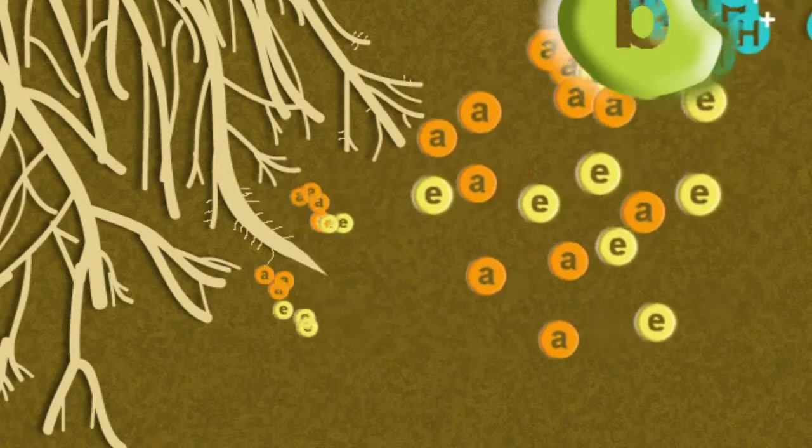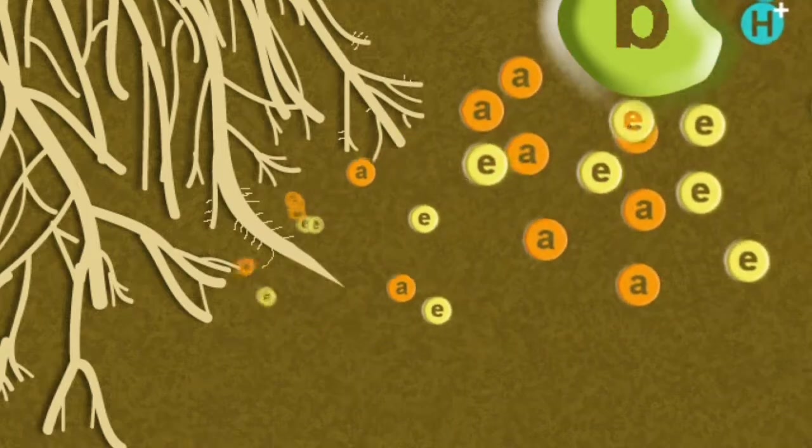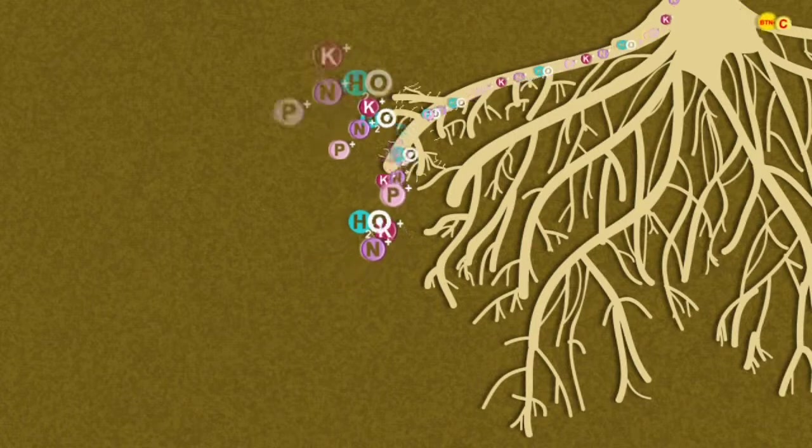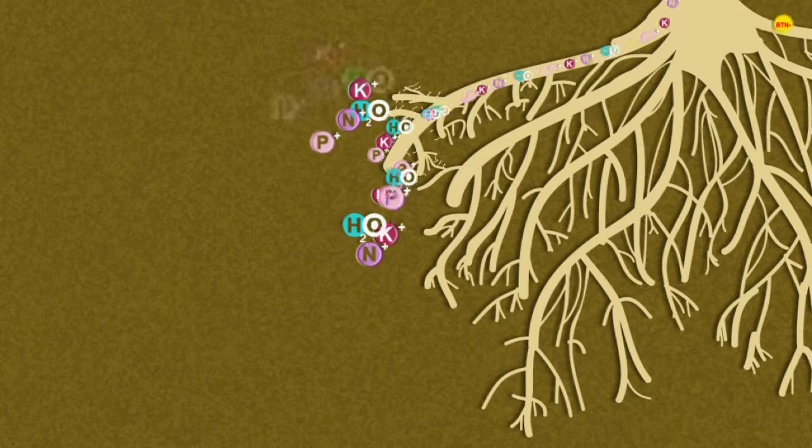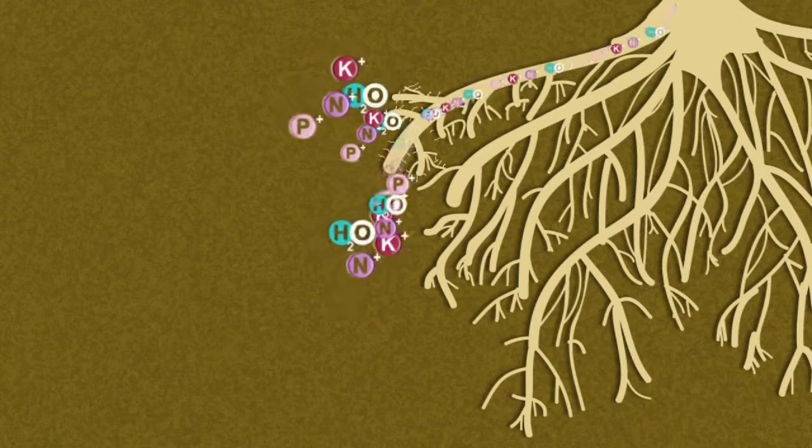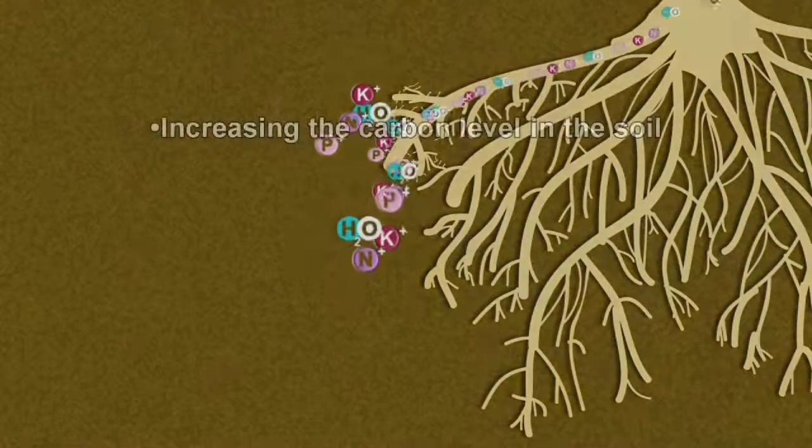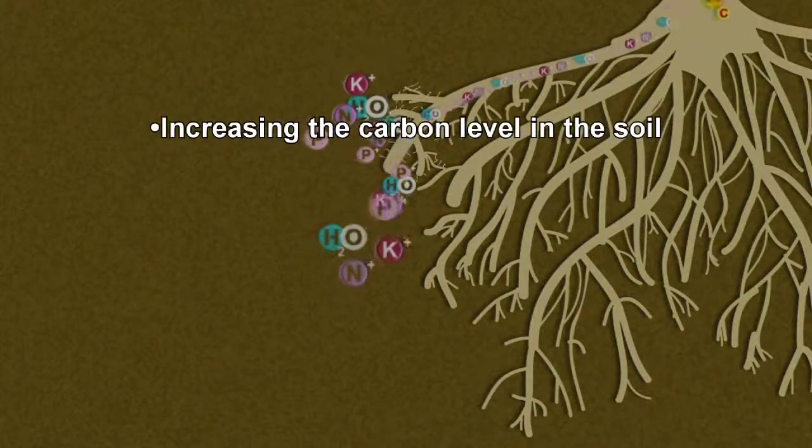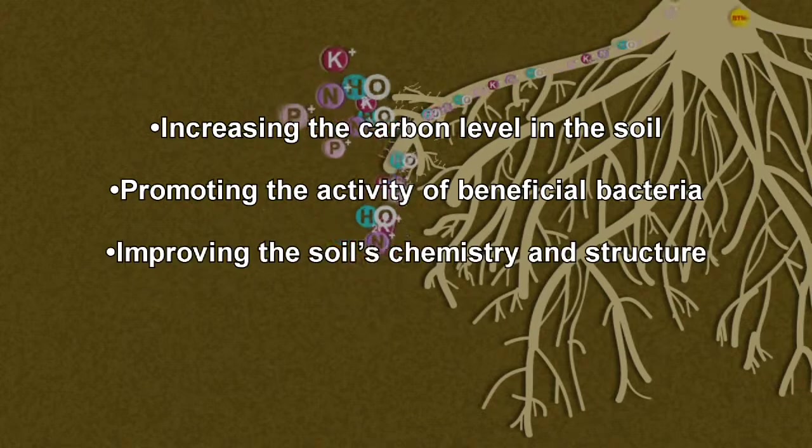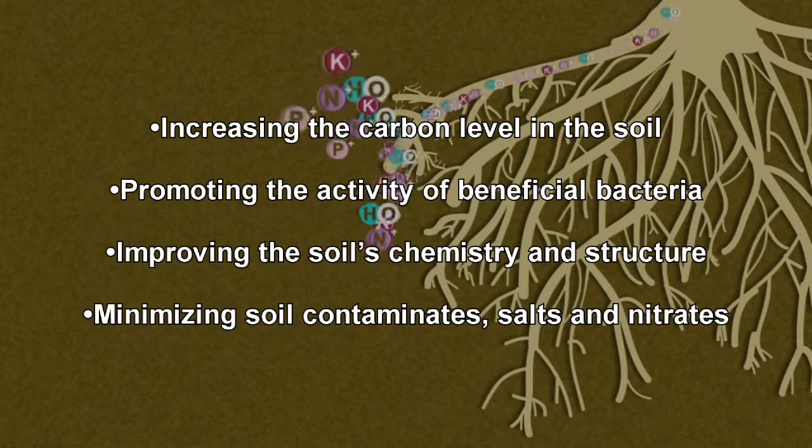By reducing these salts, BTN allows maximum root penetration and nutrient uptake during the growth of the plant. The plant's own survival is based on its ability to balance the plant's water and nutrient uptake. BTN builds a bigger, more viable root system by boosting both the carbohydrate and nutrient availability to the plant. This is done by increasing the carbon level in the soil, promoting the activity of beneficial bacteria, improving the soil's chemistry and structure, and minimizing soil contaminants, salts and nitrates.